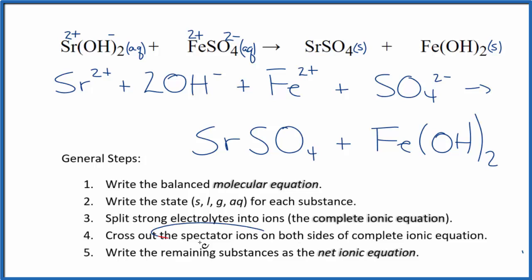At this point, we can cross out spectator ions. They're on both sides of the complete ionic equation. The thing is, everything here in the reactants is different than everything in the products, so we can't cross out any spectator ions. So the complete ionic equation, that's the same as the net ionic equation. So this is both the complete and net ionic equation for Sr(OH)₂ plus FeSO₄.